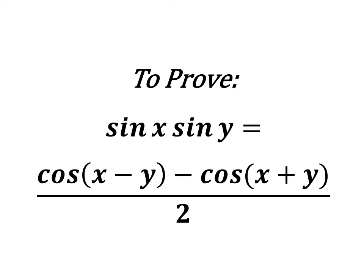In this video, we will learn to prove the trigonometric identity: sine of x times sine of y is equal to half of cosine of x minus y minus cosine of x plus y.